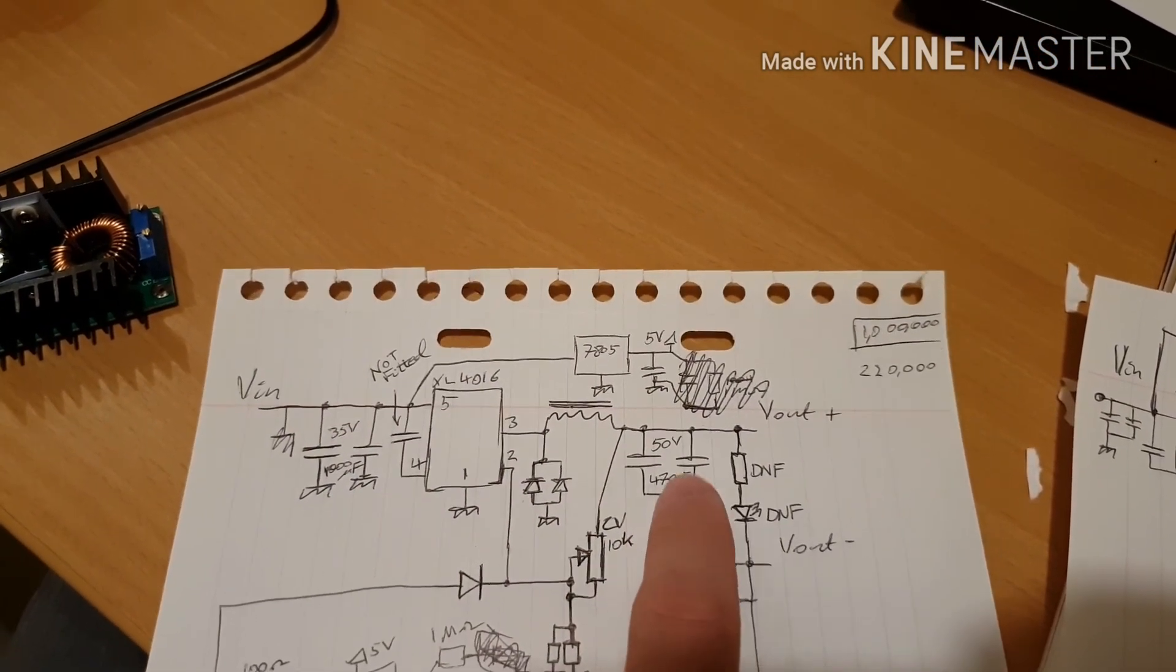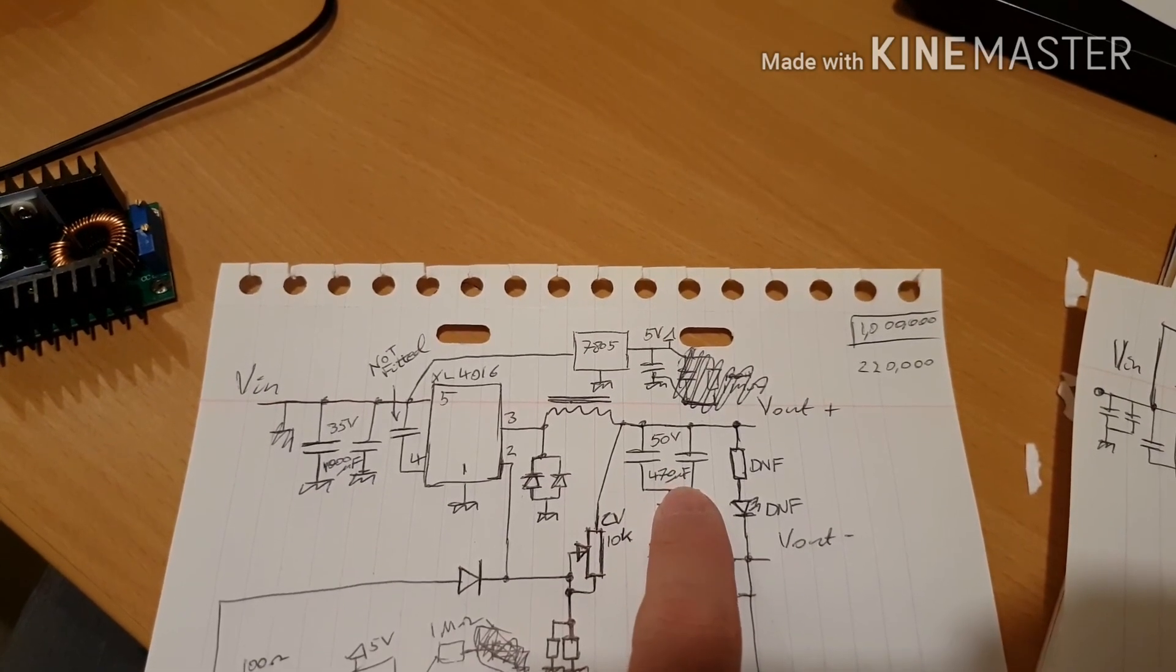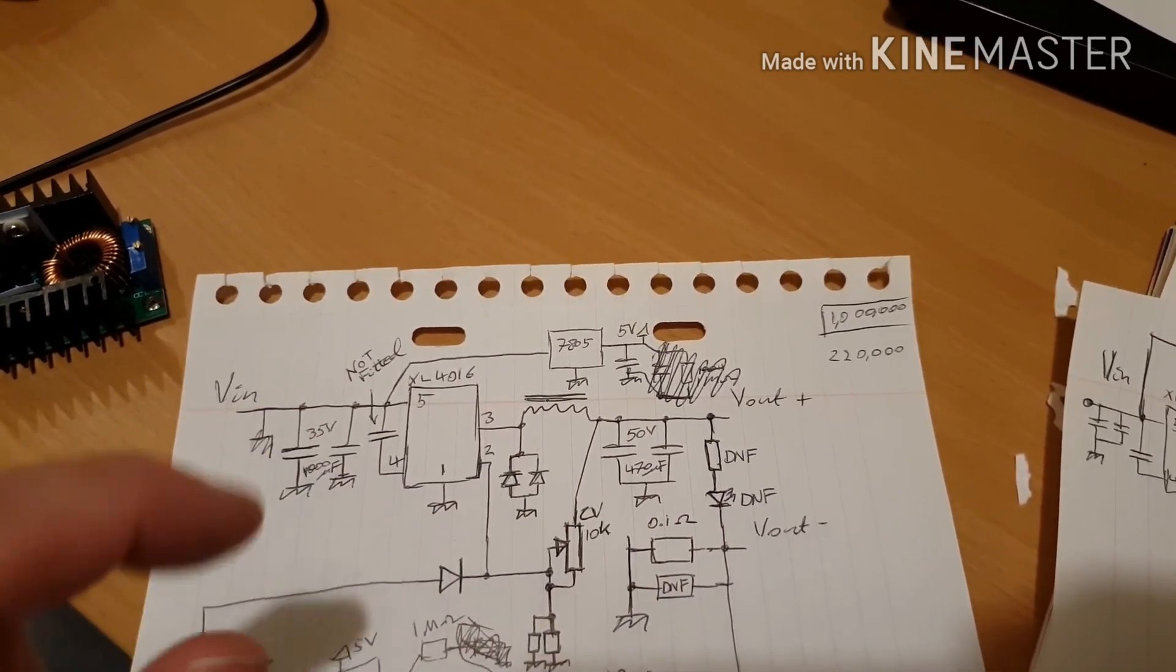So the other thing I'm going to do tomorrow is swap these around. I'm going to put the 1,000 microfarad 35 volts on the output, and I'm going to put the pair of 470 microfarad 50 volts on the input.